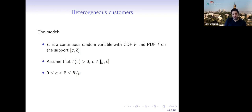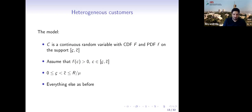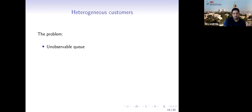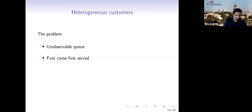The queue is unobservable, so customers decide whether to join without inspecting the queue. The service regime is first-come-first-served — we simply ignore the cost parameter in priority decisions. Each customer observes their own c, then decides whether to join the public hospital or use the private one.